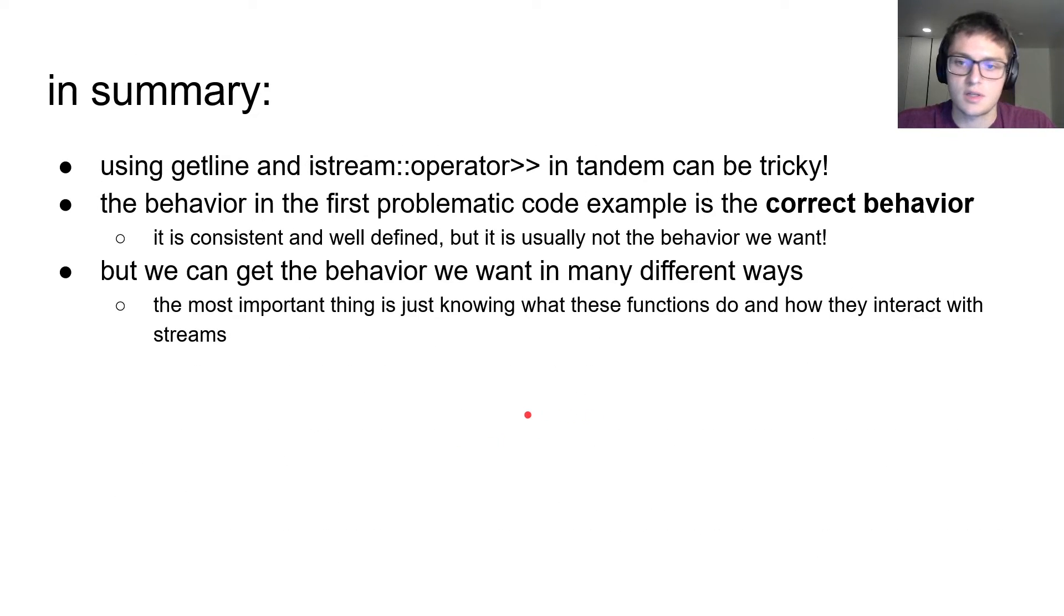So, in summary, using getline and the extraction operator in tandem can be tricky, and it's important to understand that the behavior in that first example is actually the intended correct behavior, and that it's going to be consistent, it's going to happen every time. It's just usually not the behavior we want. So, to get that behavior we want, there are plenty of different solutions. I would just recommend trying to avoid using these two operations in tandem, and really only using getline when you need it. And if you know what these functions do, if you go back and review these slides, it's pretty easy to avoid making this mistake.